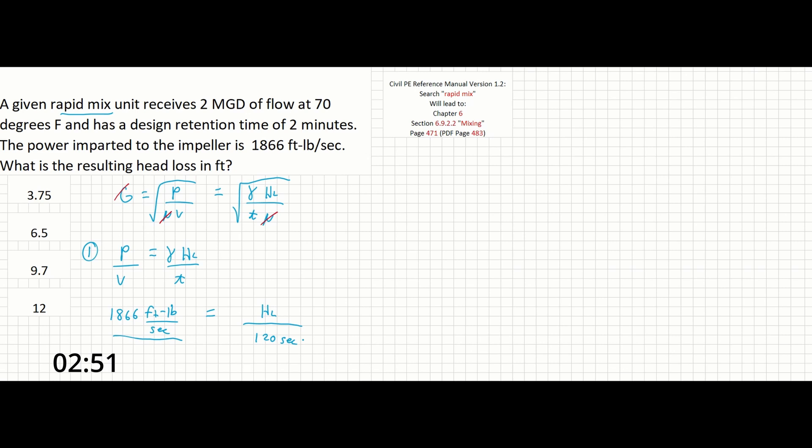All we need to do now is find the volume and find gamma and we can solve this out. So the volume is given here as the flow. We can calculate that as follows. Volume equals 2 MGD times our conversion of 1.547 CFS to MGD. And from here we can multiply it by the retention time to find the amount of volume that stays in the rapid mix unit. So 2 minutes times 60 seconds per minute.